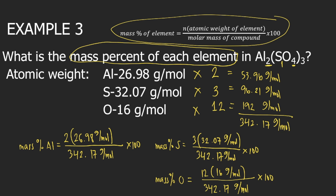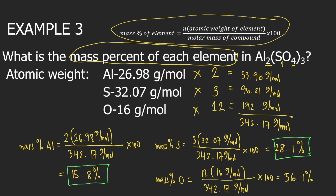For mass percent of aluminum, if you solve this in your calculator, this is equal to 15.8 percent. For mass percent of sulfur, this is equal to 28.1 percent. And for oxygen, this is equal to 56.1 percent. So these are the answers: 15.8 percent aluminum, 28.1 percent sulfur, and 56.1 percent oxygen.